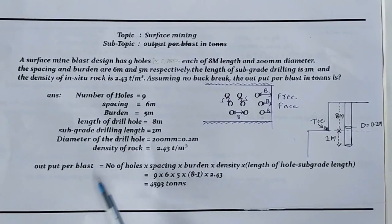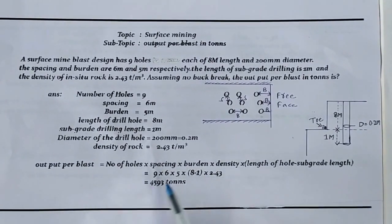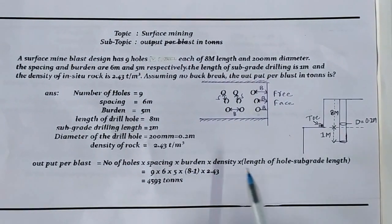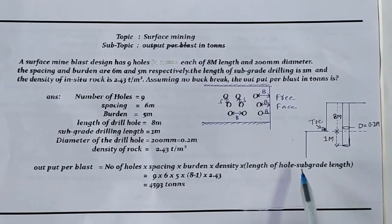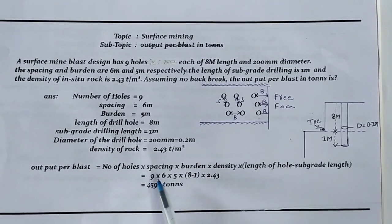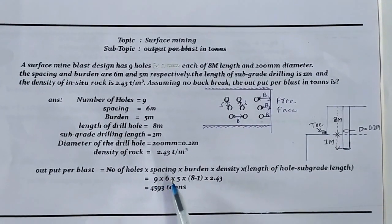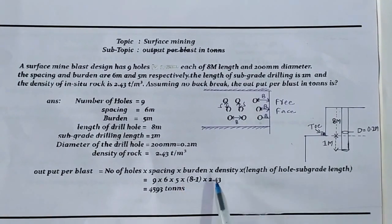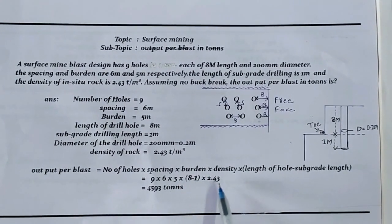Output per blast equals number of holes multiplied by spacing, burden, density, and length of hole minus subgrade length. Number of holes is 9, spacing is 6 meters, burden is 5 meters, density is 2.43 tons per cubic meter.